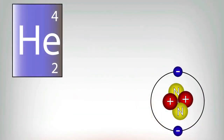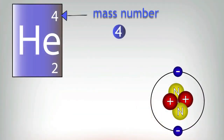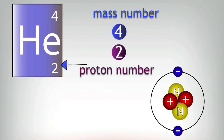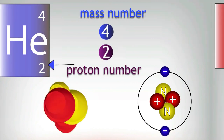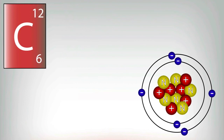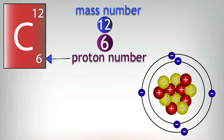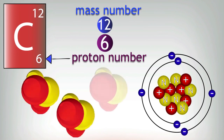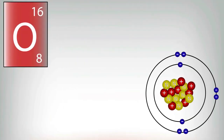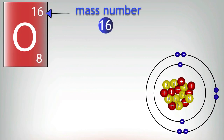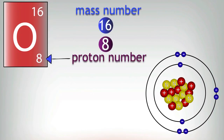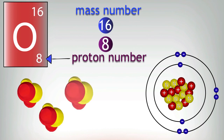Let's look at helium first. Helium has got a mass number of four and a proton number of two. Now let's go on to carbon. Carbon has got a mass number of 12 and a proton number of six, so it could be made up of three blocks of two neutrons and two protons. Then finally, oxygen has a mass number of 16 and a proton number of eight, and it can be made up of four of these building blocks.